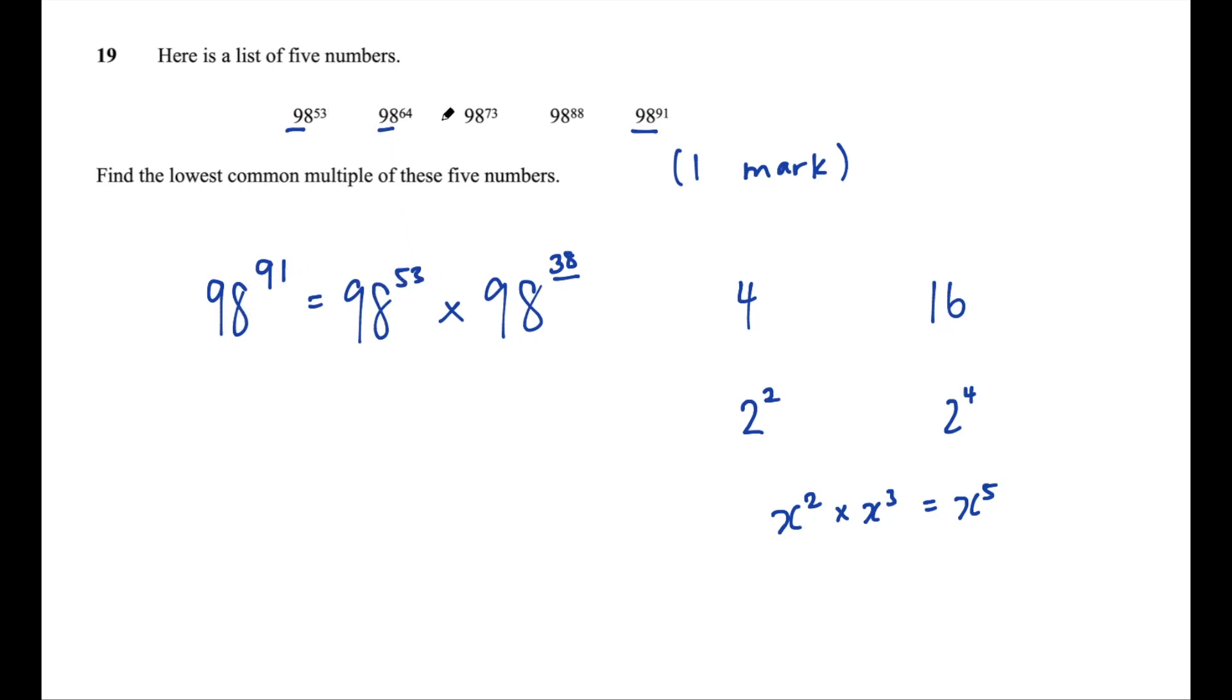So, all of these smaller numbers are factors of 98 to the power of 91. And what do we just say? Well, when the lower numbers are factors of the larger number, that larger number is automatically the lowest common multiple. So, the solution to this question is 98 to the power of 91. And that's all you need to write for that one mark.